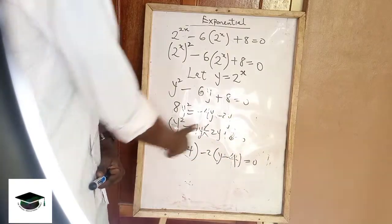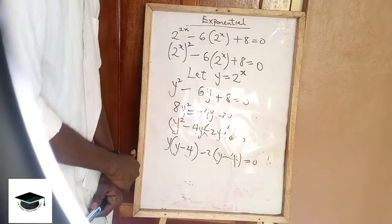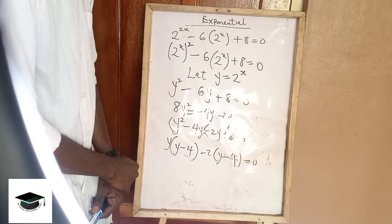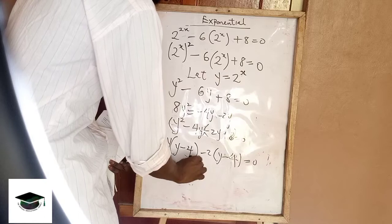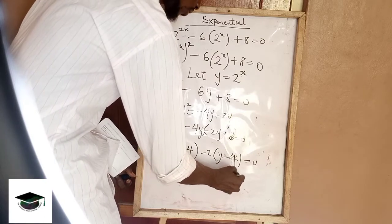So now, since we have these two the same, it's correct. But whenever you're solving a quadratic equation, and you arrive at this point, and you see that these two brackets are not the same, that means you have made mistakes somewhere. And then you have to cross-check. So now, from that, we're going to make y minus 2, y minus 4 equals to 0.